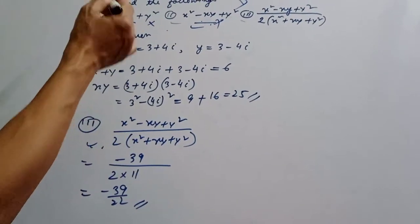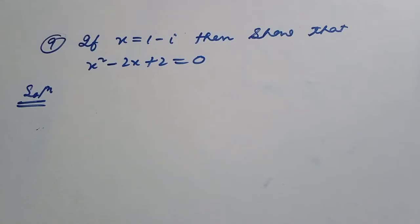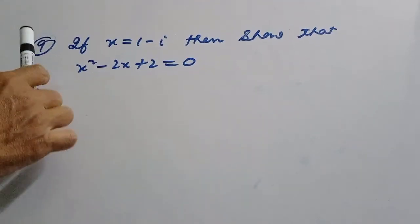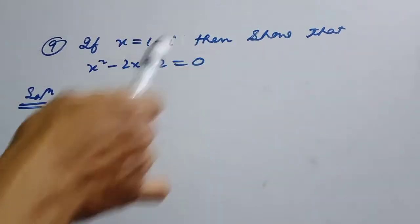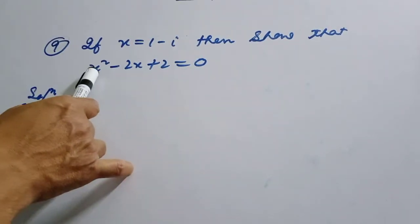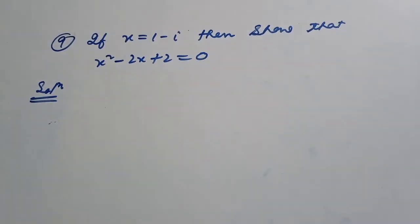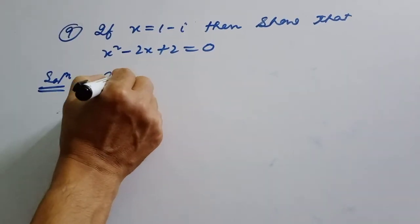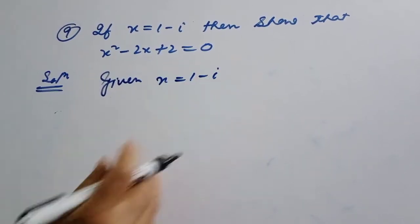Question number 9: if x is equal to 1 minus i, show that x squared minus 2x plus 2 is equal to 0.